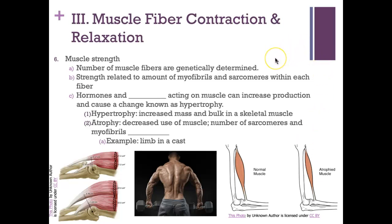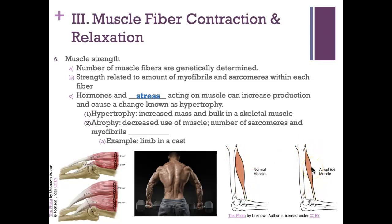Muscle strength is related to the number of myofibrils and sarcomeres within each fiber, which is genetically determined. Hormones and mechanical stress can increase production and cause hypertrophy — an increase in the mass and bulk of skeletal muscle by increasing the size of muscle fibers, not the number. Conversely, disuse leads to atrophy, where sarcomeres disappear along with myofibrils — for example, when a limb is immobilized in a cast.